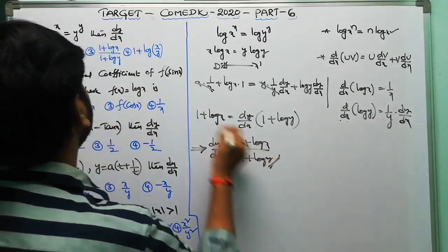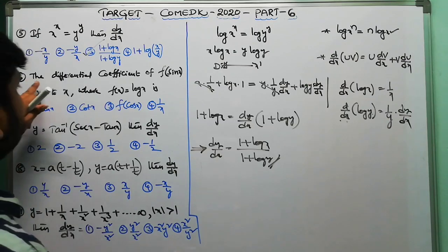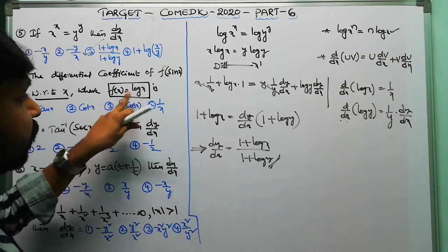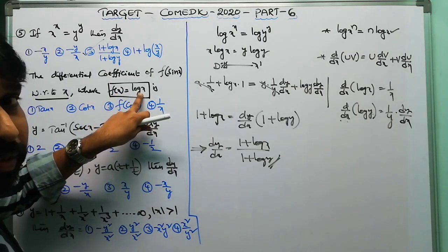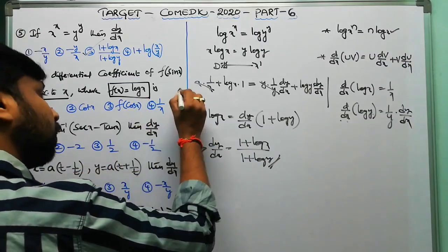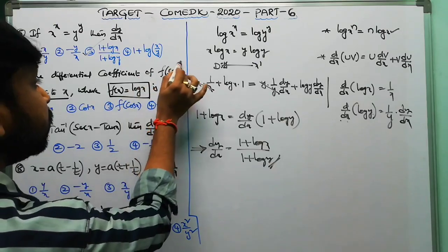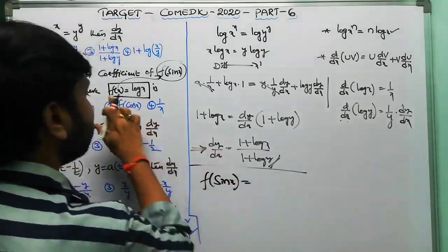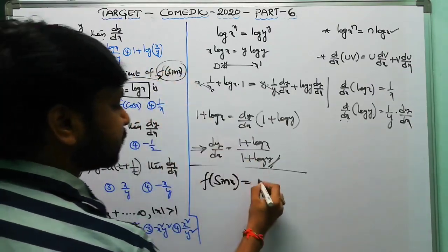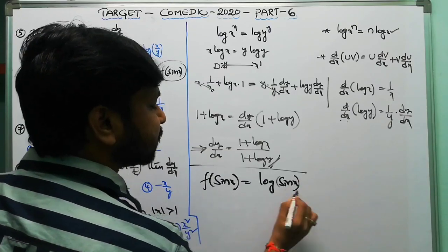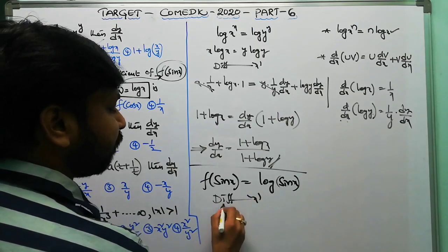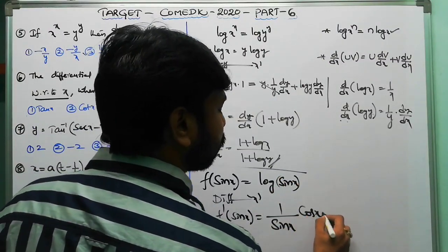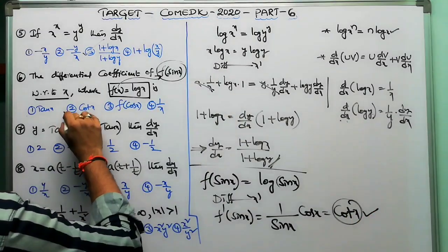Next question: find the differential coefficient of f(sin x) with respect to x, where f(x) = log x. Since f(x) = log x, f'(x) = 1/x. But we need f(sin x), not just f(x). Replacing x with sin x: f(sin x) = log(sin x). Differentiating with respect to x gives f'(sin x) · cos x = (1/sin x) · cos x = cot x. So cot x is the correct answer — option 2.